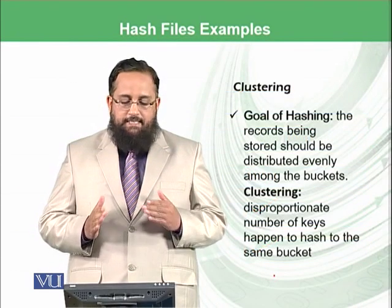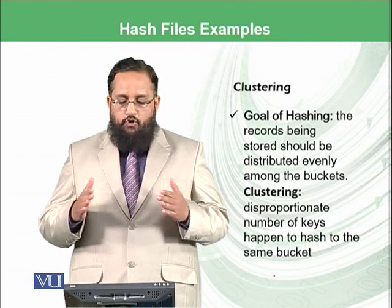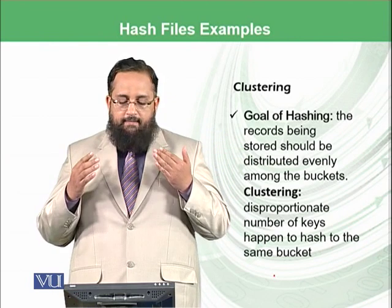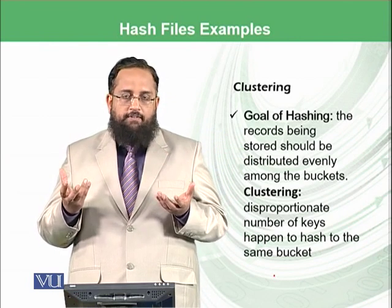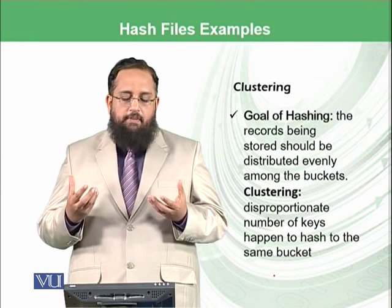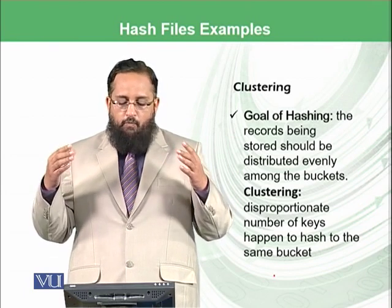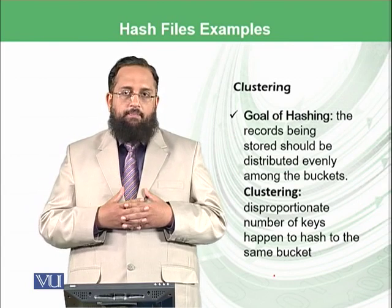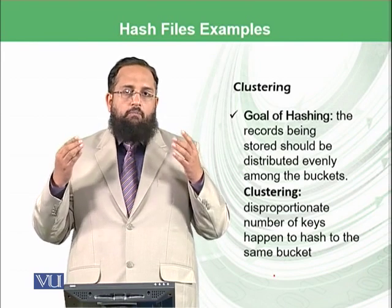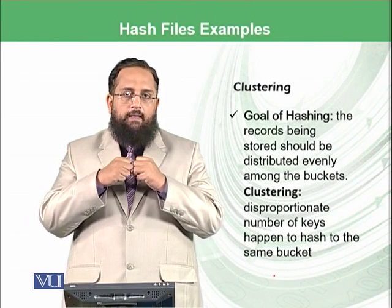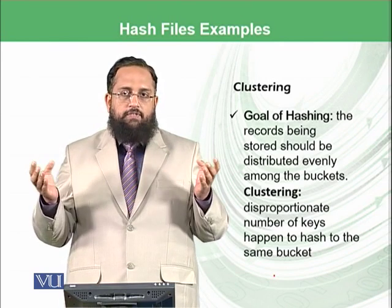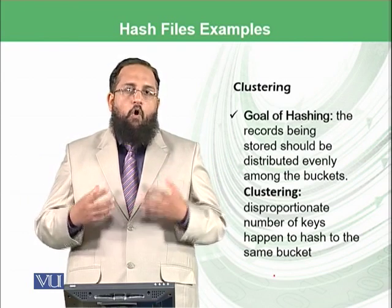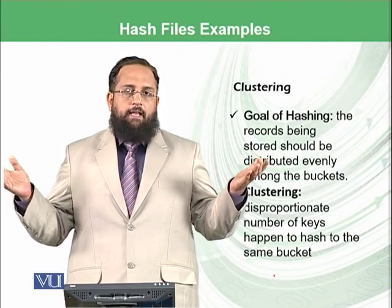There is another concept known as clustering. The records being stored should be distributed evenly among the buckets. And this is the goal of the hashing as we have discussed. And what does clustering mean? That disproportionate number of keys happen to hash to the same bucket. This means majority or most of the records are coming at one particular bucket as we have seen that if all of the remainders are 2, then second number bucket will be overloaded and all other buckets will be empty. So such a concept is known as clustering.